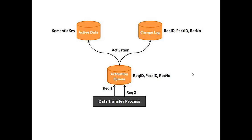When you load data from a DTP or source system into your DSO, it initially reaches the activation queue table — the new data table. This activation queue table is relevant only for the Standard DSO. When data is loaded into a Standard DSO, it is first stored in this table. The key fields of this table are technical and consist of the request ID (surrogate ID), the package ID (data package number), and the record number.